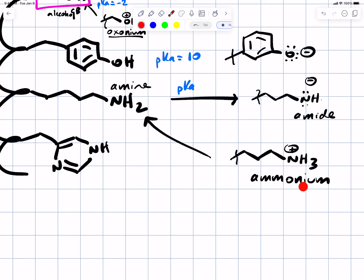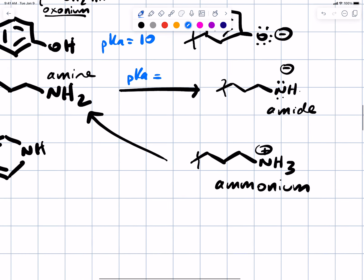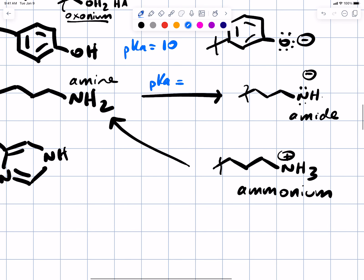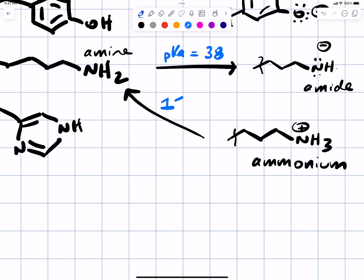The other mistake people make is they look at the pKa table and use the wrong pKa for the situation. Neutral amine to negatively charged amide has a pKa of 38, not 11. 11 versus 38 is a big difference — you can see how you might make wrong conclusions if you mix that up. Positively charged ammonium to neutral amine has a pKa of 11.